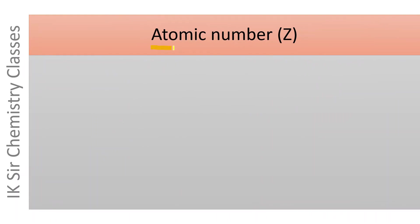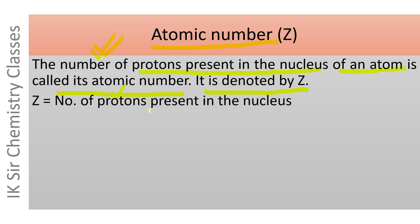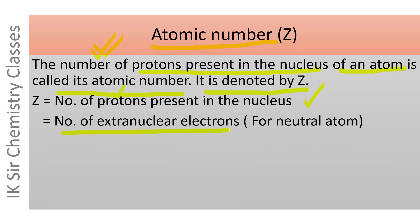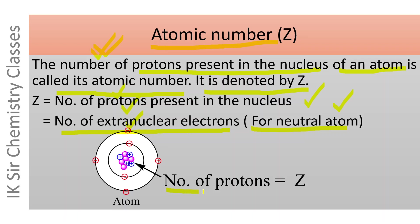Now let us see what is atomic number. The number of protons present in the nucleus of an atom is called its atomic number and it is denoted by Z. Z equals the number of protons present in the nucleus, and it is also equal to the number of extranuclear electrons when the atom is neutral — meaning the neutral atom contains the same number of protons and electrons.